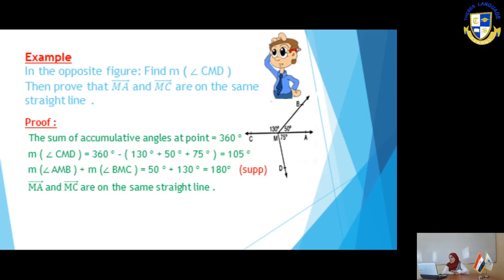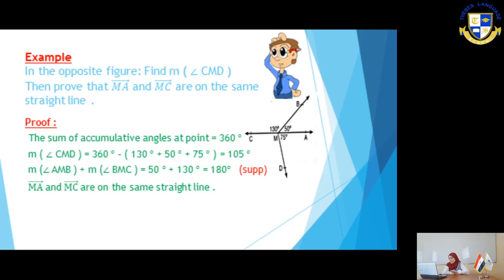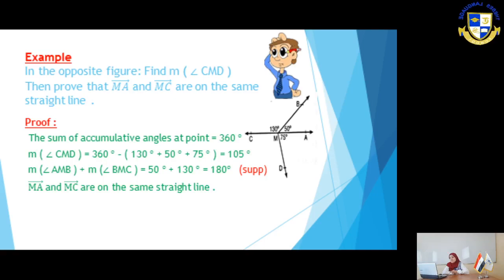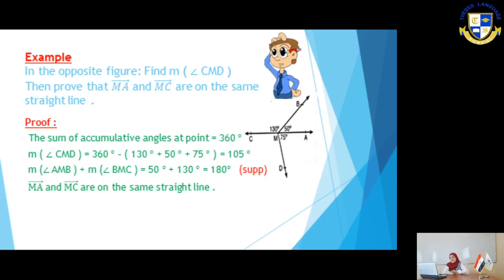To prove that ray MA and ray MC are on the same straight line, we search for two adjacent supplementary angles. Measure of angle AMB plus measure of angle BMC equals 50 plus 130 equals 180 degrees. They are supplementary angles. Therefore, ray MA and ray MC are on the same straight line.